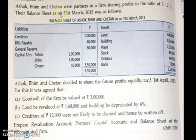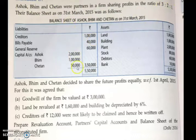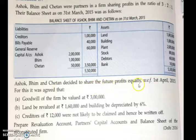The balance sheet as on 31st March 2015 was as follows. There are three partners — Ashok, Bhim, and Chetan — and their profit sharing ratio is 3:2:1. In front of you, a balance sheet is given. Let us move to the additional information provided. Ashok, Bhim, and Chetan decided to share future profits equally.